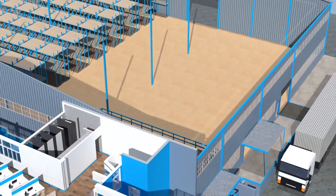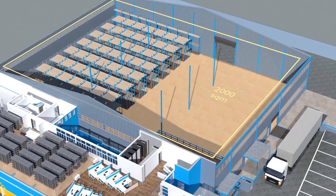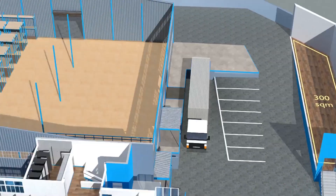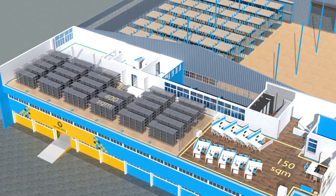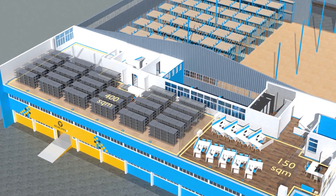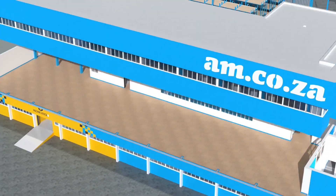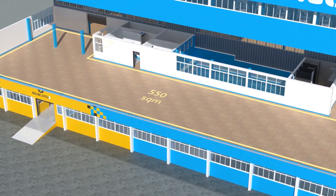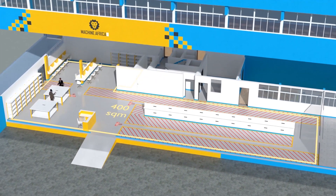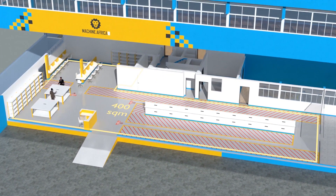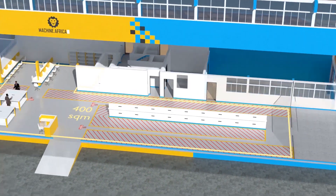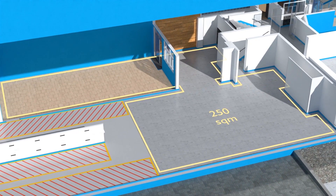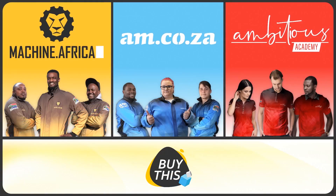The facility will comprise a massive 2,000 square meter warehouse, 300 square meters of demonstration space, 150 square meters of sales space, 400 square meters of spare part storage on the top floor, 550 square meters of showroom space on the middle floor, and 400 square meters for machine.africa for machine repairs with its own dedicated entrance, plus a 250 square meter tea garden and coffee shop for your convenience.